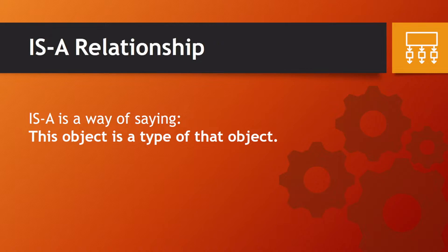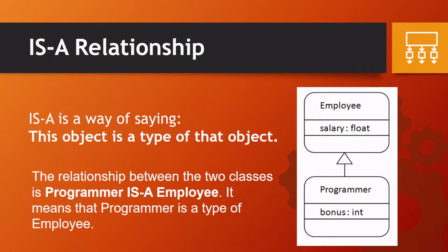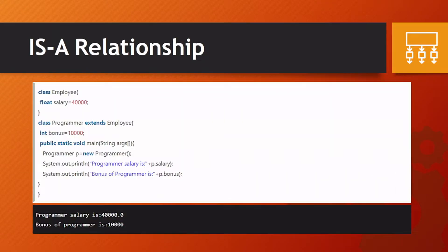This object is a type of another object. For example, we have Employee and a Programmer. Programmer is an Employee, therefore the relationship between the two classes is Programmer IS-A Employee. It means that Programmer is a type of Employee. So when we put that into code it goes like this - Employee is inherited by Programmer.